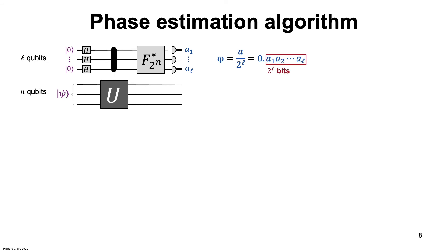The algorithm determines a — the numerator of the binary fraction for phi, or equivalently the l bits of the binary representation of phi. Note that the algorithm makes only one query, and all other operations — the gray boxes — can be implemented with a polynomial number of one- and two-qubit gates, polynomial with respect to l, the number of control qubits.